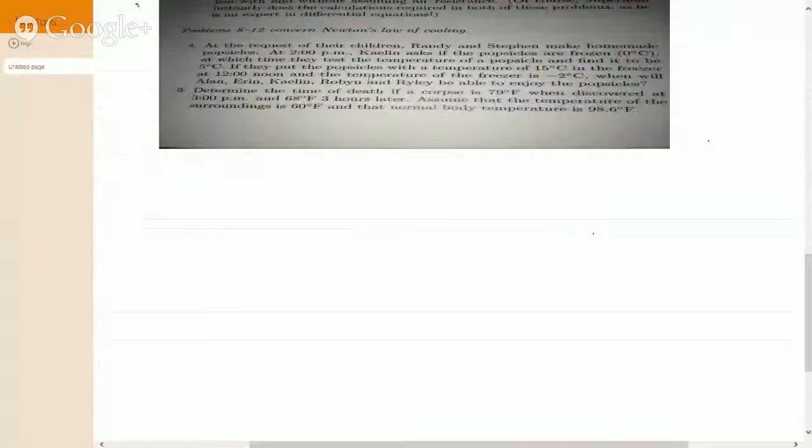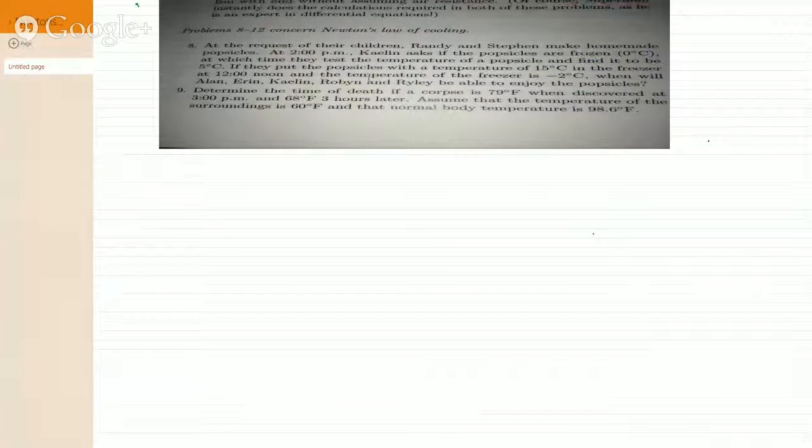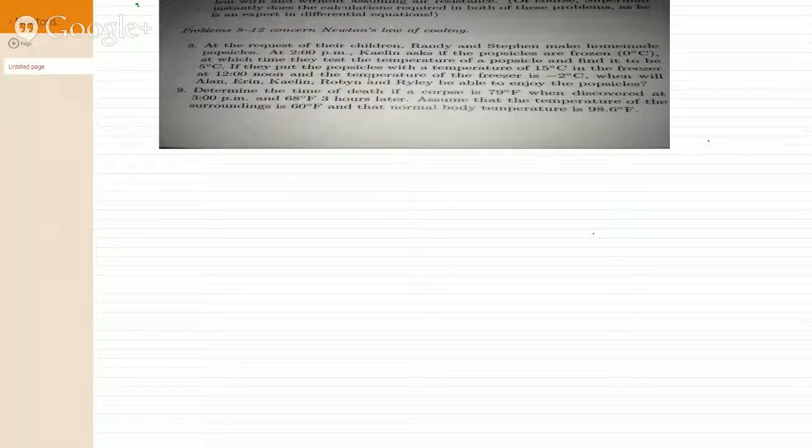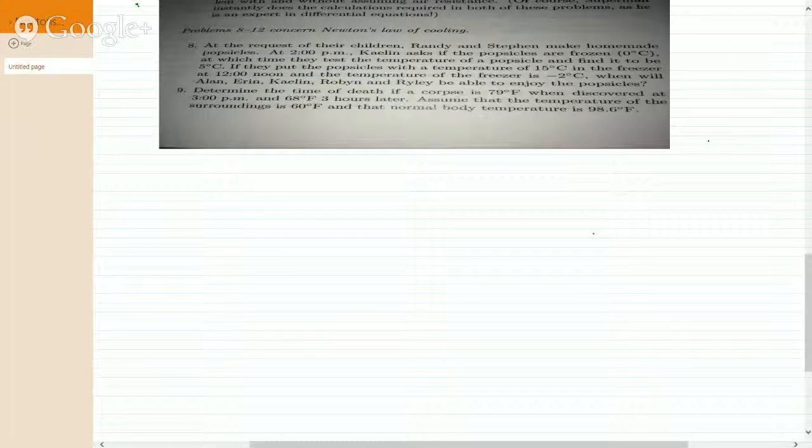We need to determine the time of death if a corpse is 79 Fahrenheit when discovered at 3 p.m. and 68 Fahrenheit three hours later at 6 p.m. Assume that the temperature of the surrounding room is 60 degrees Fahrenheit, and the normal body temperature is 98.6 Fahrenheit on average. Being a detective on this case, you are asked to figure out the time of death when the murder happened.